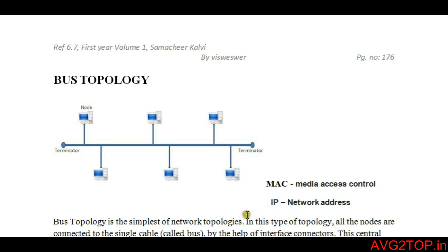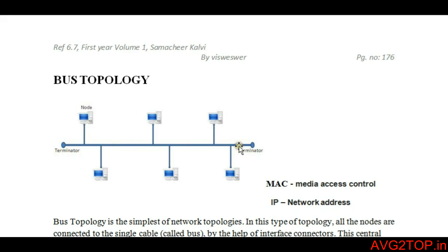Bus topology is the simplest of network topologies and it is connected with a single cable. Topology refers to the arrangement of computers. Here, bus topology is very simple — it is connected with one single cable. Nodes are said to be computers, so here there are six computers connected with one cable. That one cable is known as the bus.